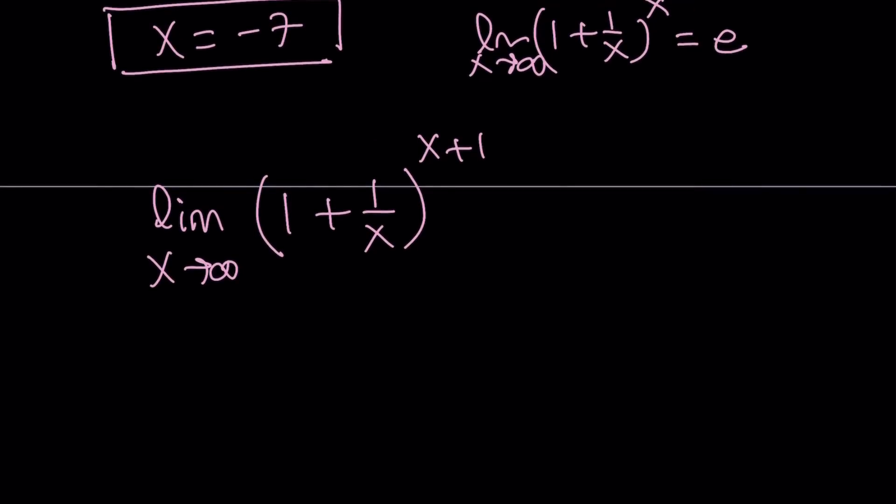Sometimes people ask, how many digits of pi did you memorize? And I always say 2. 3.14. That's what I memorize, because that's all I need. Anyways, for e, I only memorize one digit. And that is 2.7. Anyway, so that limit is e, but is this a different limit? What do you think? What's your opinion? Let's take some guesses.